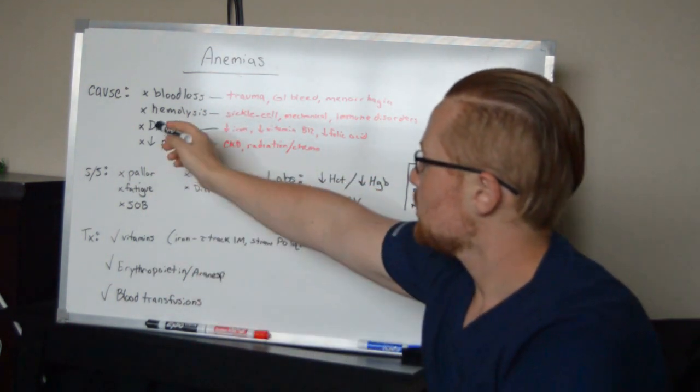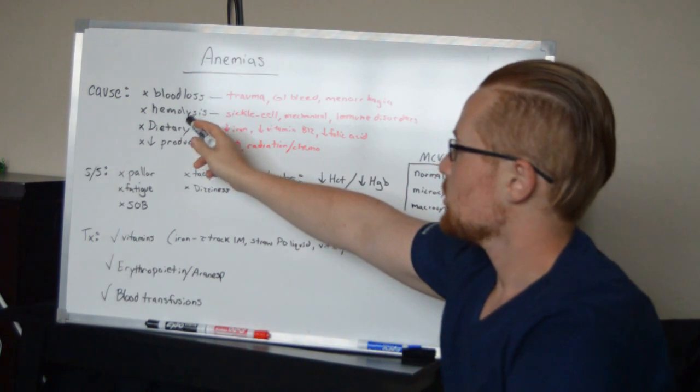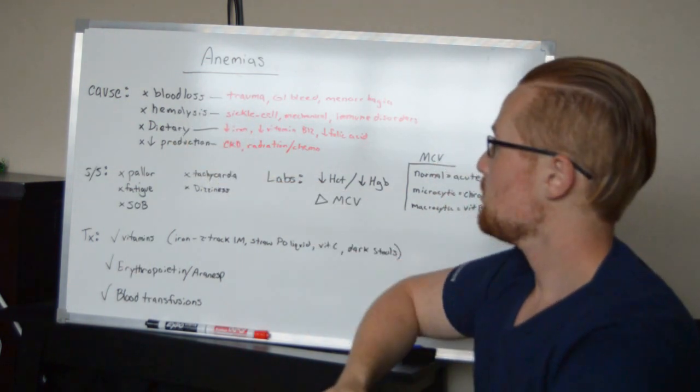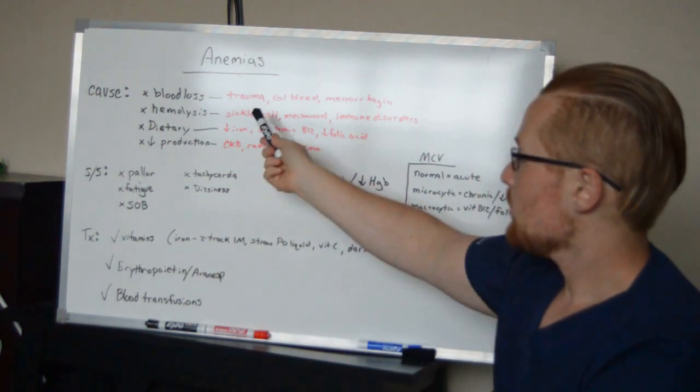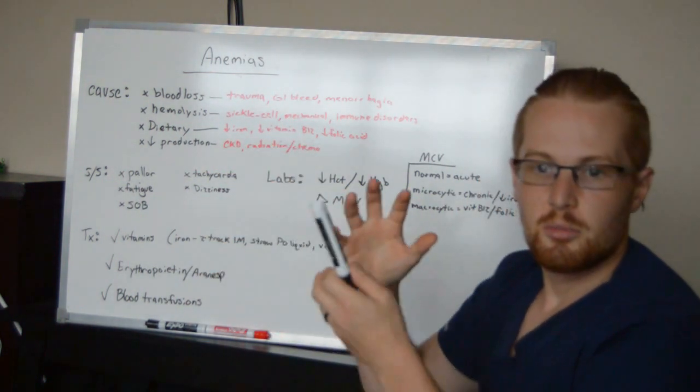Hemolysis - that means hemo is blood and lysis is the destruction of blood, so the blood breaking down. Sickle cell anemia, I'm going to have my own video on that, but in sickle cell anemia, some of the blood cells are destroyed.